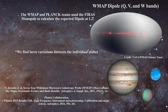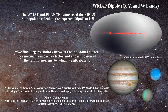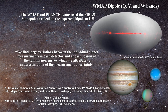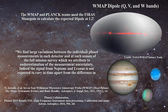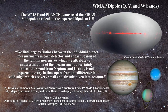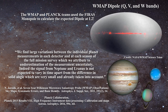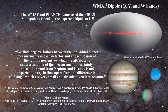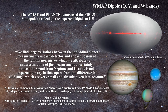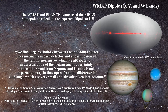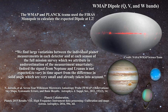Yet in the same paper, they write: we find large variations between the individual planet measurements in each detector and at each season of the full mission survey, which we attribute to underestimation of the measurement uncertainty. Indeed, the signal from Neptune and Uranus is not expected to vary in time, apart from the difference in solid angle, which are very small and already taken into account. Perhaps things are not all that well understood relative to calibration using models of Neptune and Uranus — models are just models and they can produce any result. The key point is that if one is going to calibrate using the dipole for the LFI, why use models of planets for the HFI? Something is not right here.